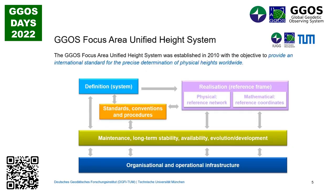The IGOS focus area was established in 2010. The objective was to provide an international standard for the precise determination of physical heights — a reference system for physical heights. The components for this standard were classified as: definition of the system, realization of the system, and standard conventions and procedures to ensure that the realization strictly follows the definition. We also need to keep these three elements up-to-date: refining the definition as theory advances, updating the realization with new stations or data, and keeping standards current with new models.